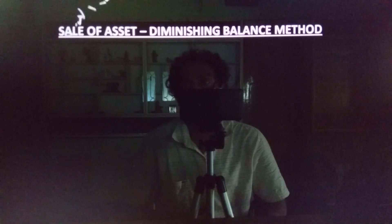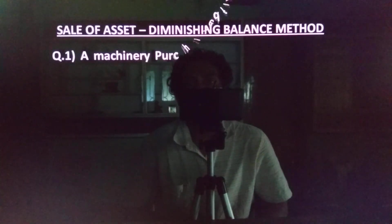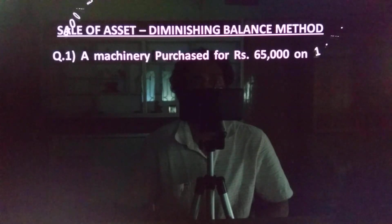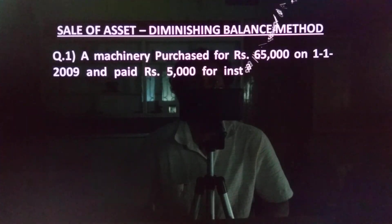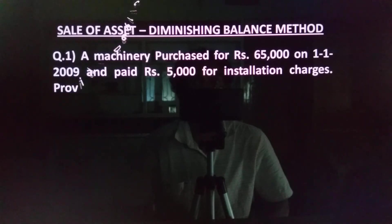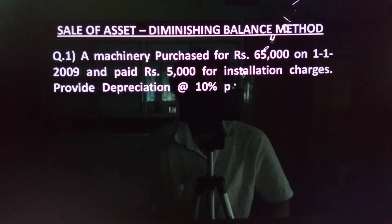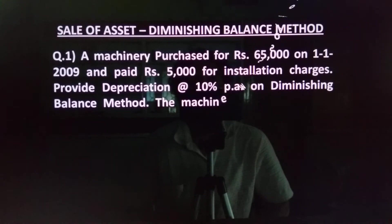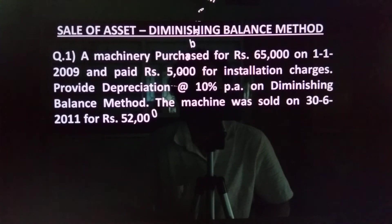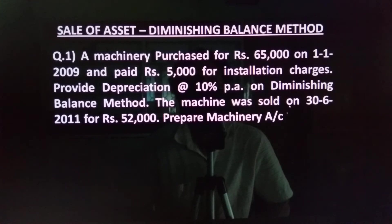The first question is: a machinery purchased for Rs.65,000 on 1-1-2009 and paid Rs.5,000 for installation charges. So my purchase is 65,000 plus 5,000; the total cost of asset is 70,000. Provide depreciation at the rate of 10% per annum on diminishing balance method. The machinery was sold on 30th June 2011 for Rs.52,000.